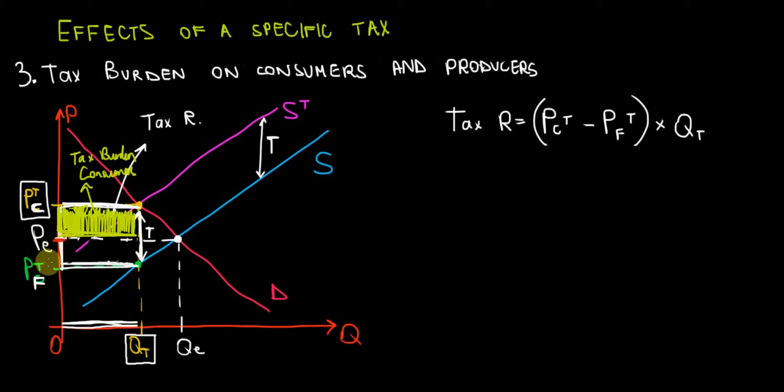This difference over here, multiplied by the quantity that's being taxed on the market, is going to be this rectangle that I'm shading right now. And that's going to be the tax burden for the suppliers, for the firms. This is the tax burden for the producers, and that's where the tax revenue is coming from.